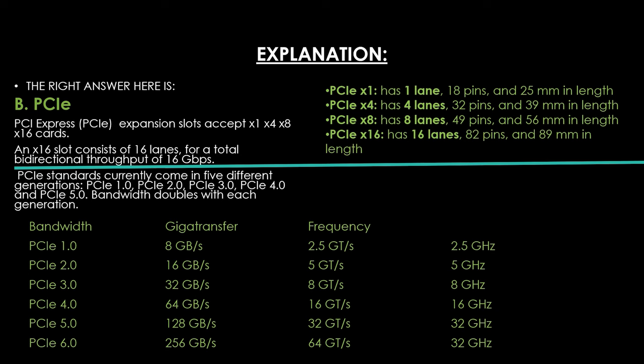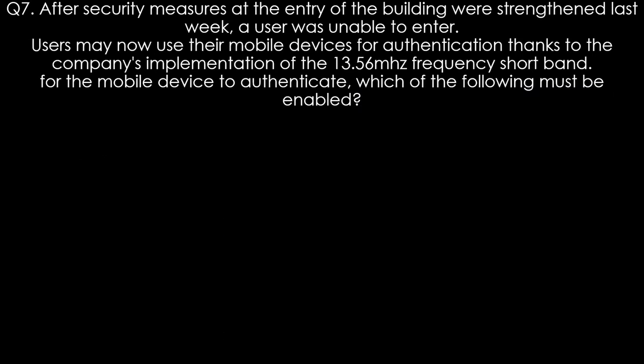The table shows the bandwidth, transfer speed, and frequencies of each PCIe version, as well as the lanes, pins, and length of each PCIe slot. These are important so try to memorize them. Question seven. After security measures at the building entry were strengthened, users may now use their mobile devices for authentication using the 13.56 MHz frequency short-range band. Which of the following must be enabled?